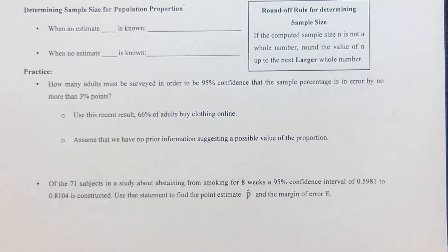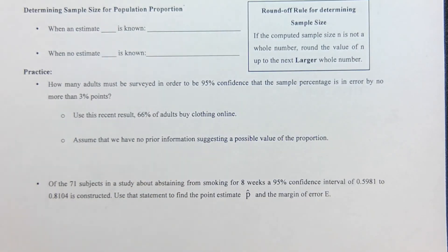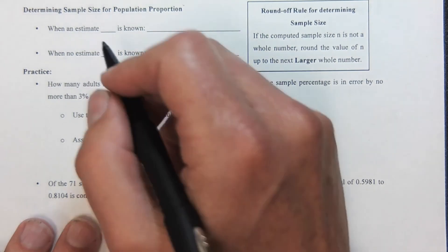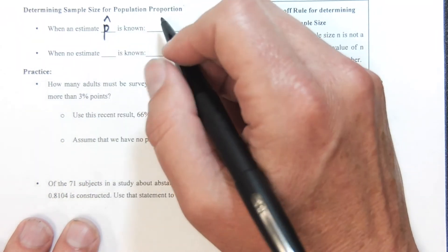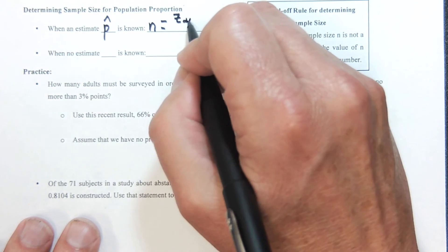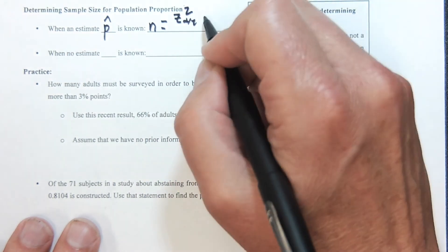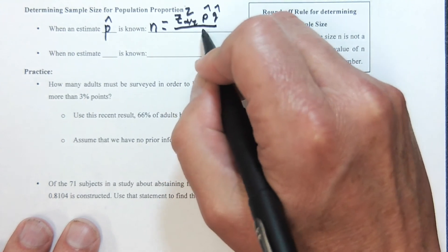So here we're going to determine a sample size. Determining a sample size for a population proportion—if we want to know what does n need to be so we can guarantee a certain percent within that. When the estimate p hat is known, we're going to use this formula: n equals Z sub alpha over 2 squared times p hat times q hat divided by our error.